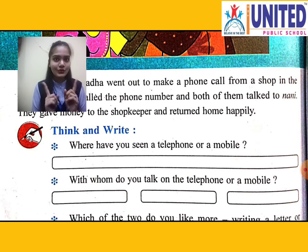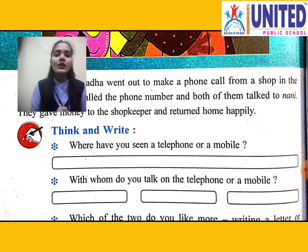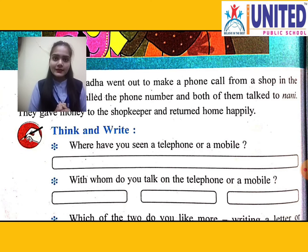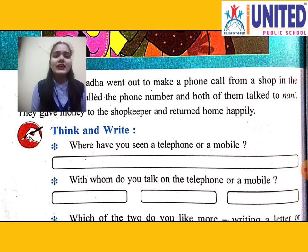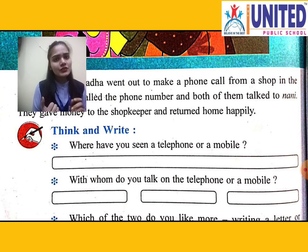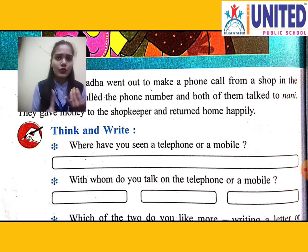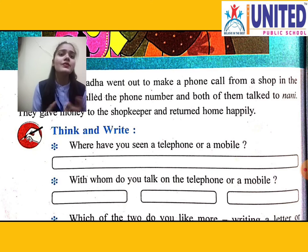Now there are questions to answer. Think and write. Question number one: Where have you seen a telephone or a mobile phone? We can see phones or mobiles in many places — school, home, hospital, office, railway station, police station — everywhere we can see a telephone or mobile.